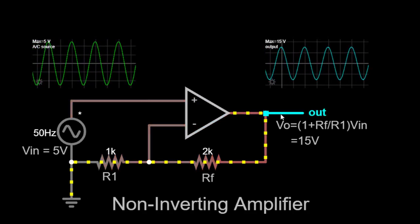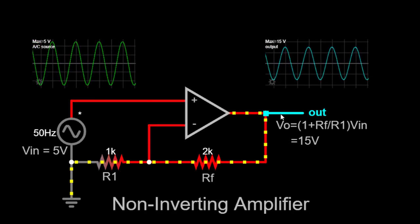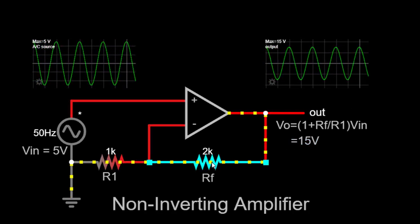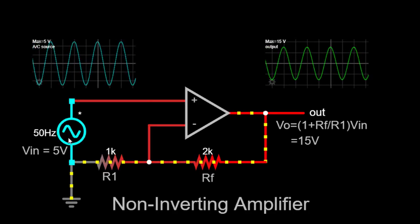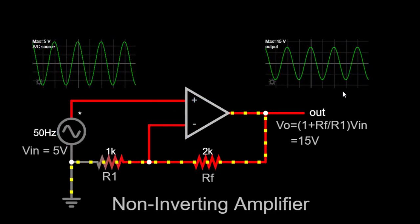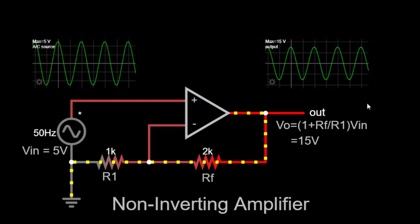The non-inverting amplifier circuit works based on the principle of negative feedback. When an input signal is applied to the non-inverting terminal, the op-amp tries to balance the potential difference between its two inputs.